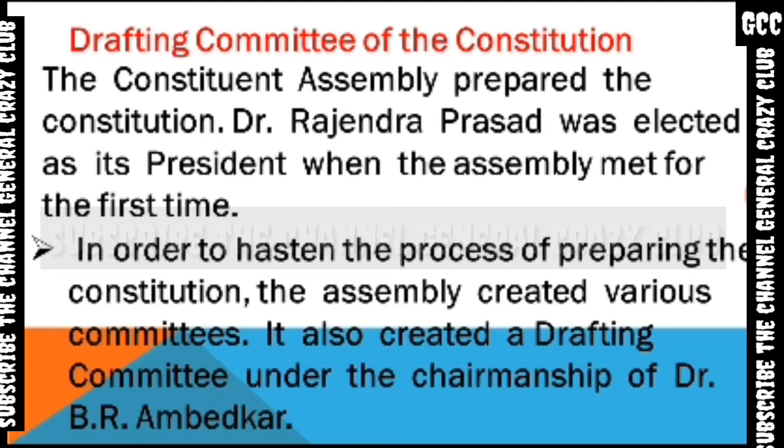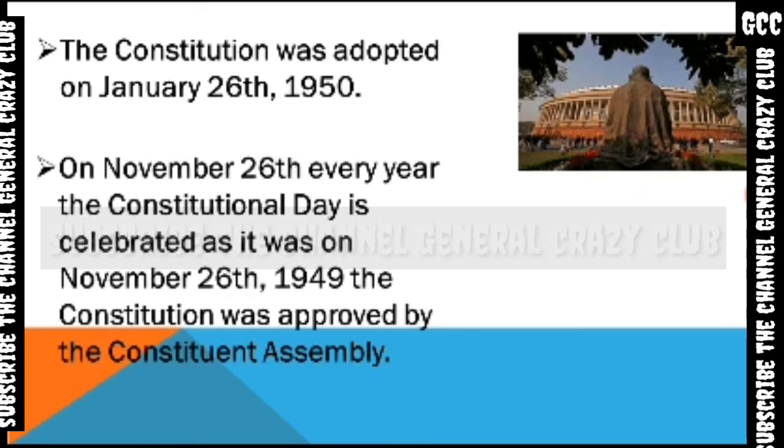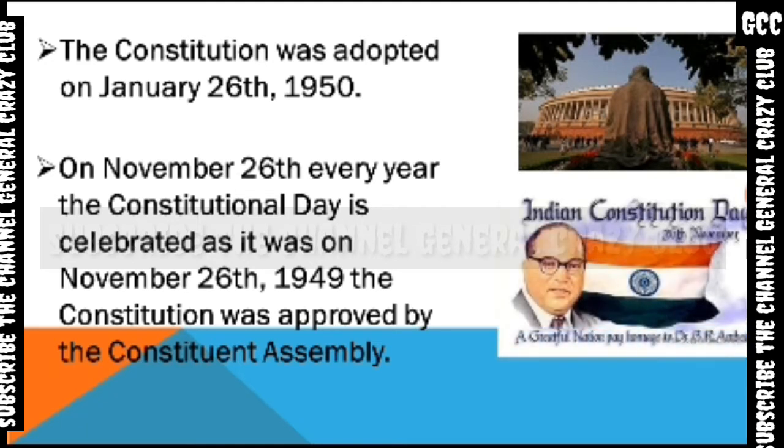According to the directives of the Constitution, the first General Elections of India were held between 1951 and 1952. The Parliament with a bicameral legislature — Lok Sabha and Rajya Sabha — came into force in 1952. The Constitution was adopted on January 26, 1950, by the Constituent Assembly. The Constitution of India contains 395 articles and 12 schedules.